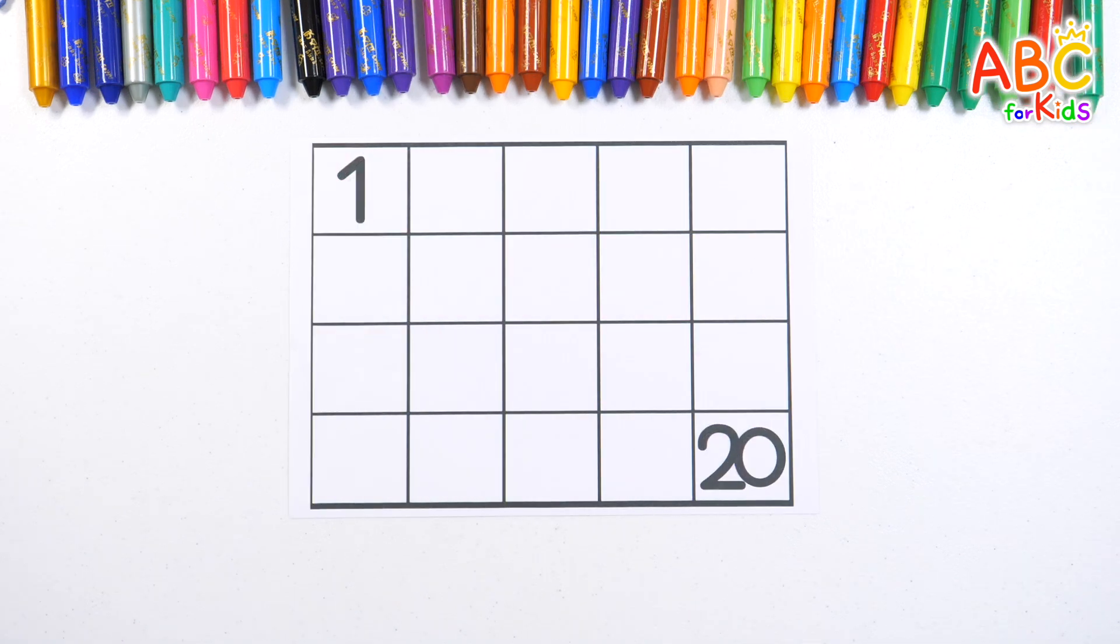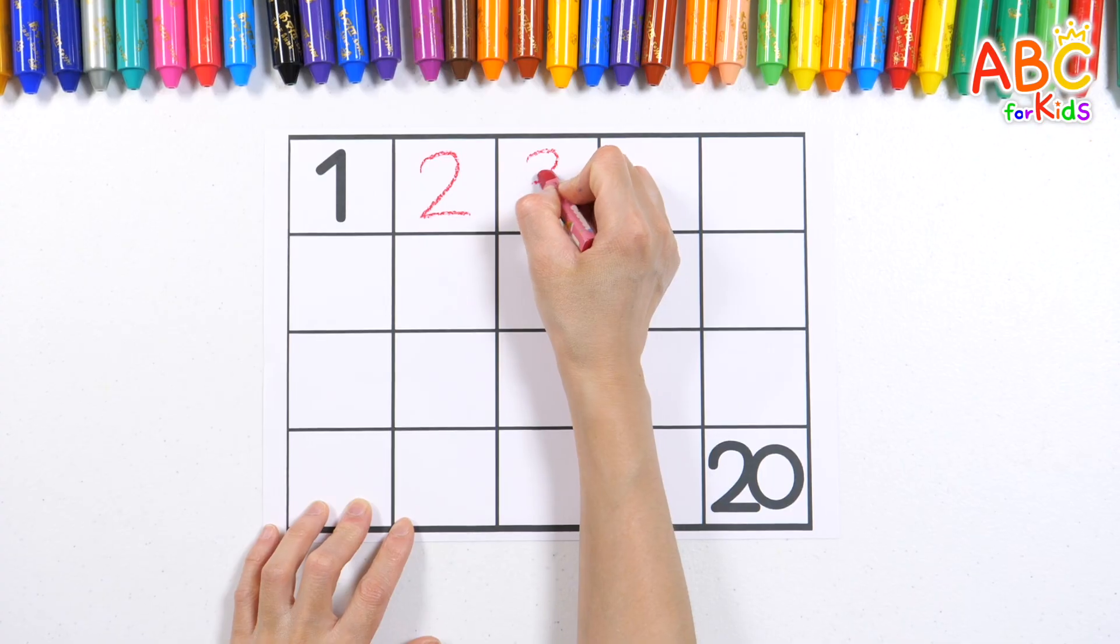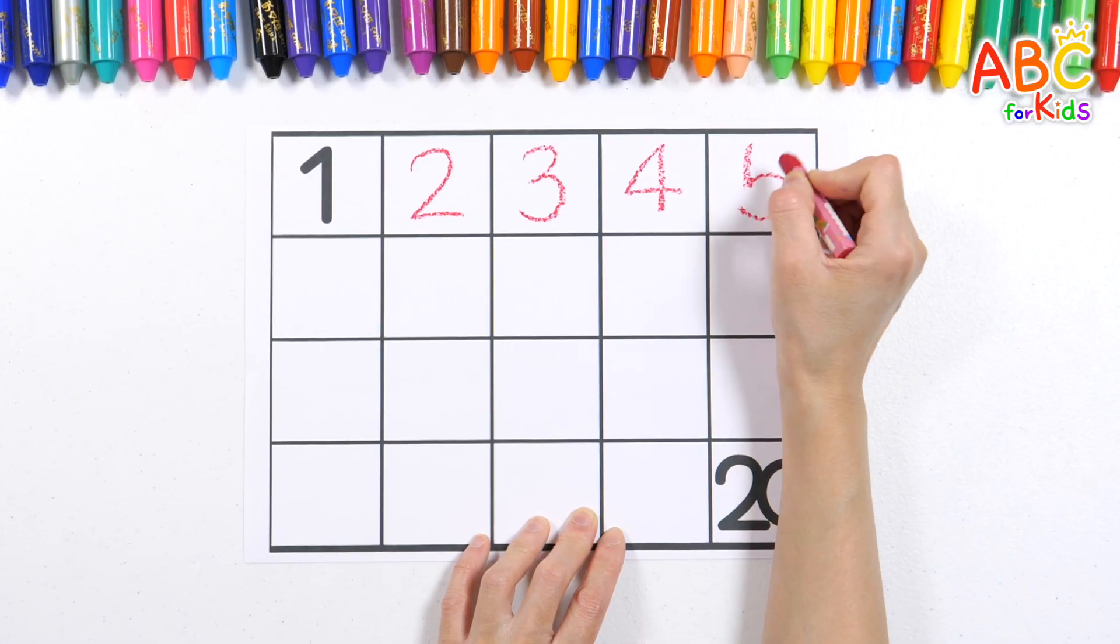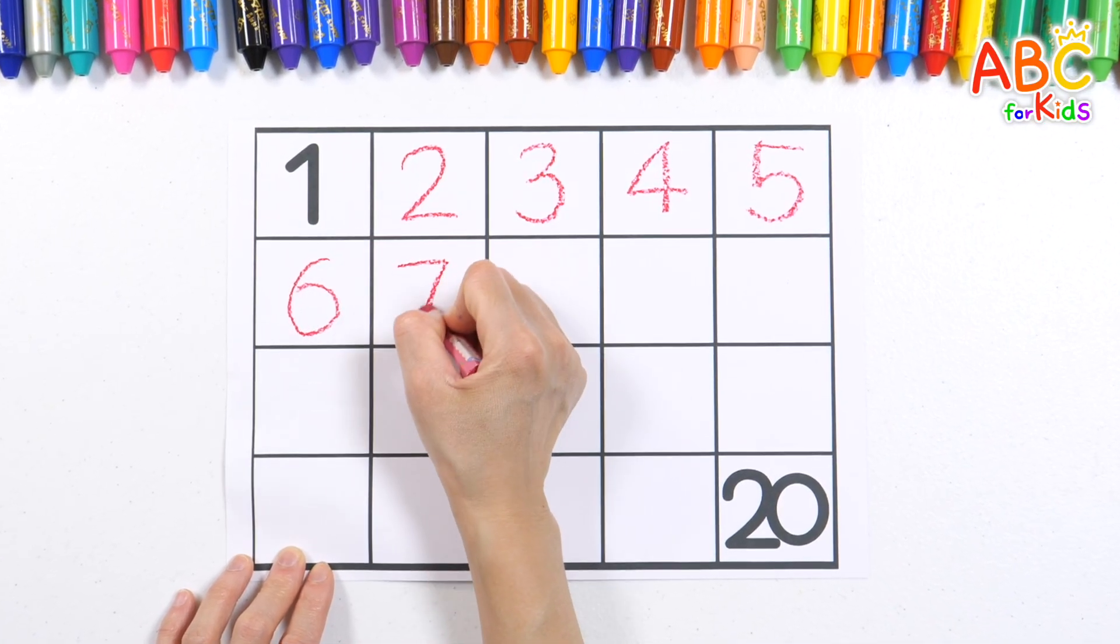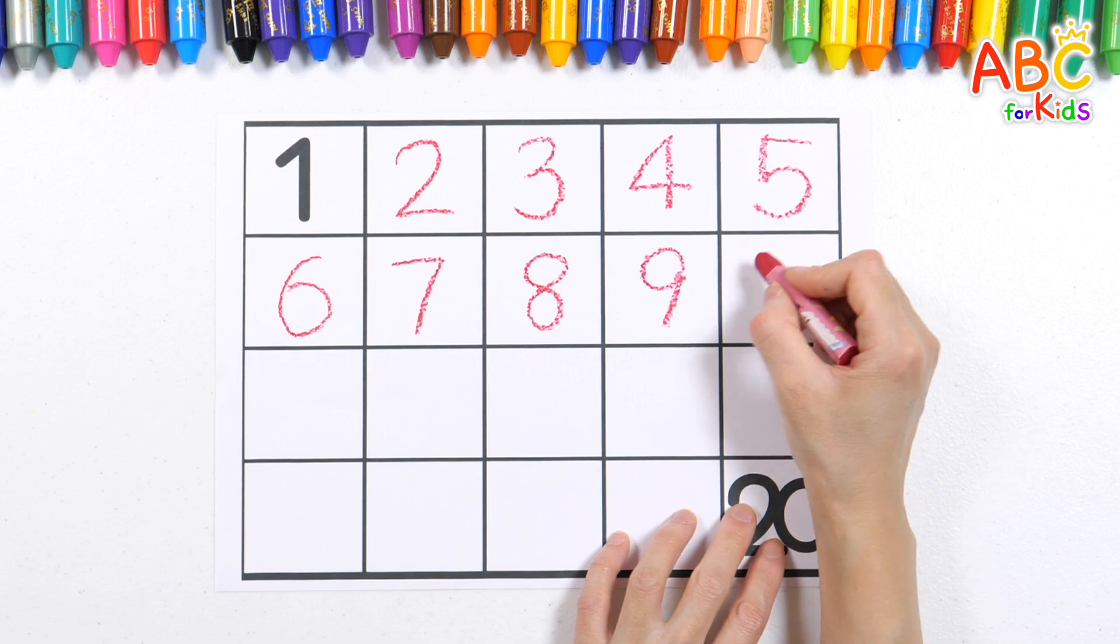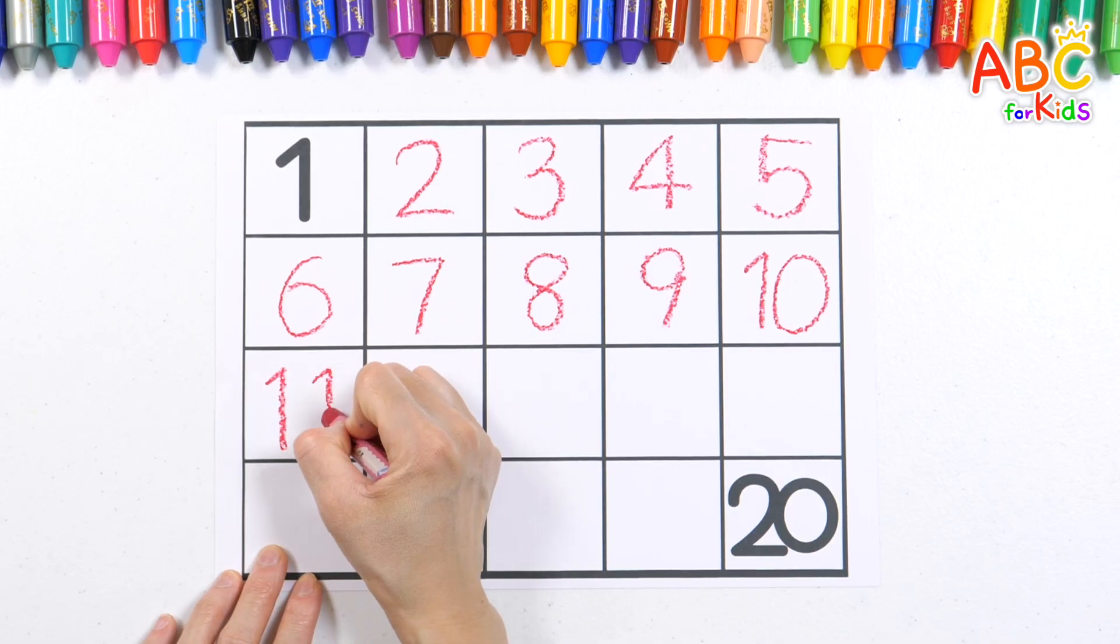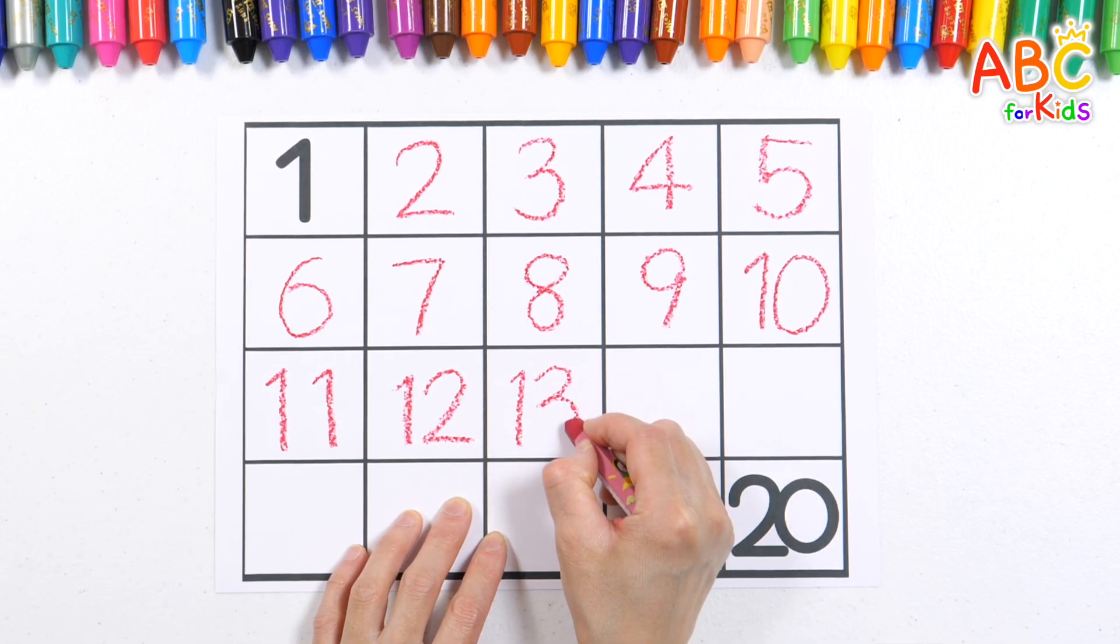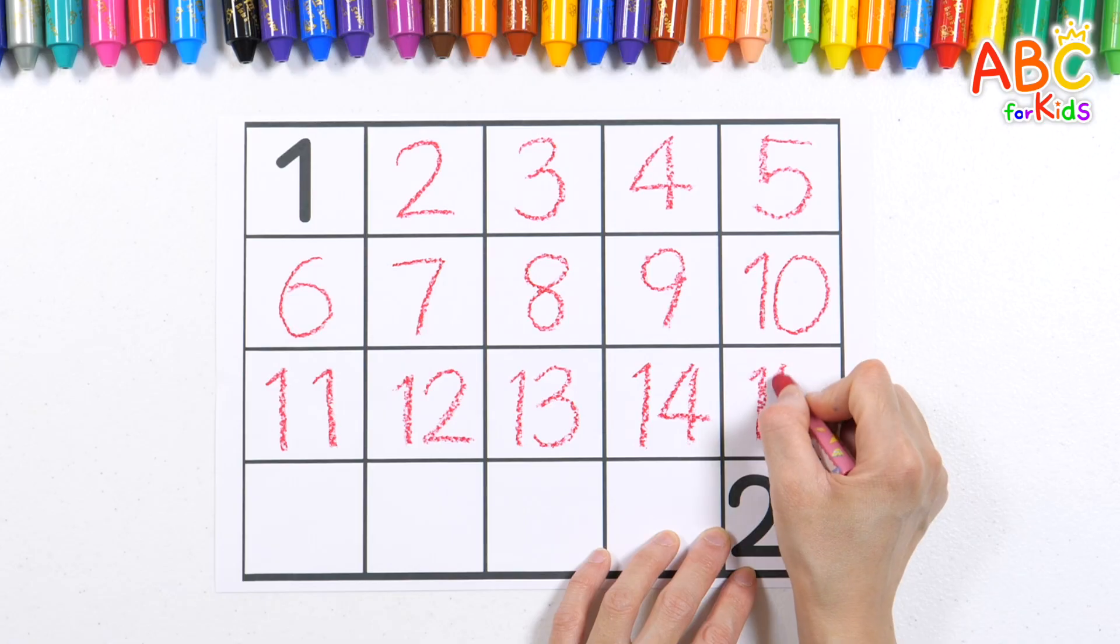Let's try writing the numbers from 1 to 20 in order. 1, 2, 3, 4, 5, 6, 7, 8, 9, 10, 11, 12, 13, 14.